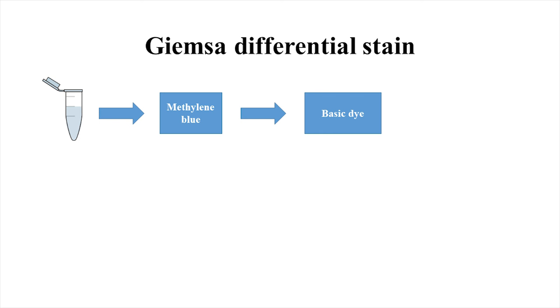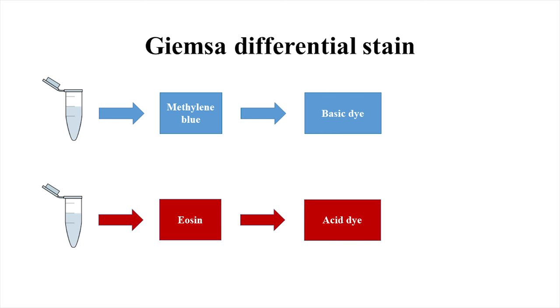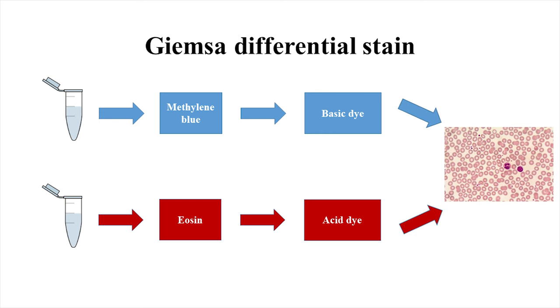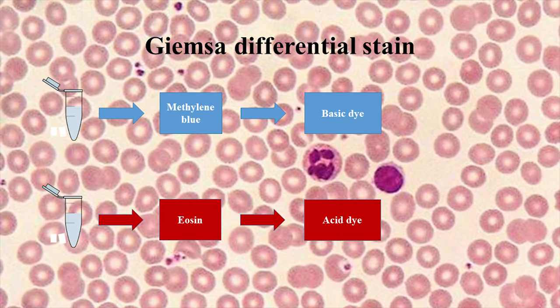Hematological stains use methylene blue and its oxidation products as basic dyes, combining them with eosin as an acid dye. In this way, we obtain a stain that discriminates the different cellular structures as they are stained with the acid dye, with the basic one, or with the combination of both.